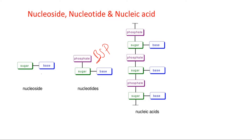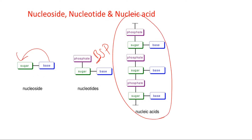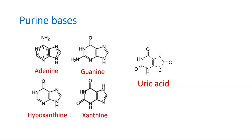Nucleoside is base and sugar. Nucleic acids are polynucleotides. The bases are of two types: purines and pyrimidines.